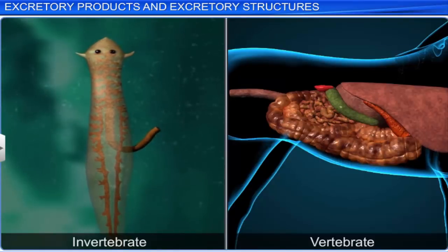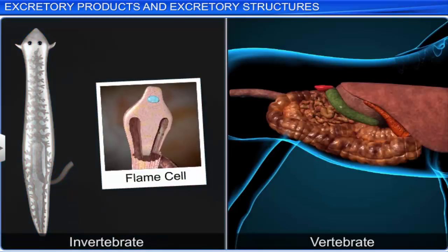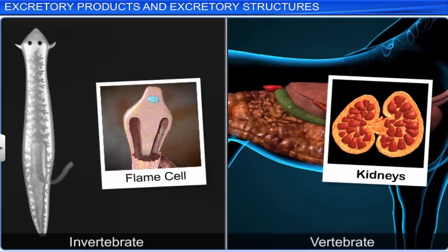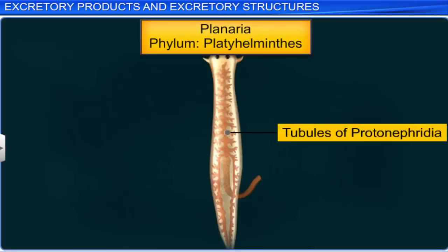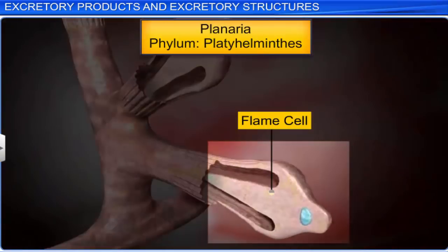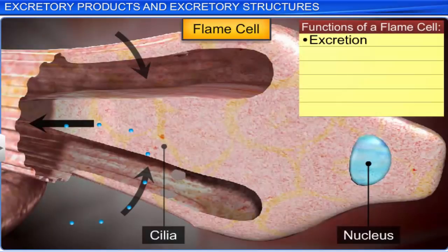The study of phylogeny of the excretory system reveals that primitive animals such as invertebrates possessed simple organs like protonephridia or flame cells, which in the course of time evolved into complex organs such as the kidneys in vertebrates. Flame cells or protonephridia are the excretory structures in animals like platyhelminthes, rotifers, cephalochordates, and certain annelids. Apart from performing the function of excretion, these cells help in osmoregulation, or the regulation of the fluid volume and ionic balance in the body.